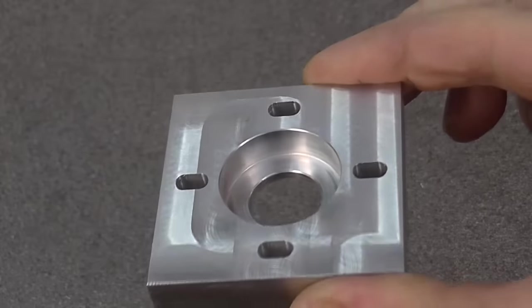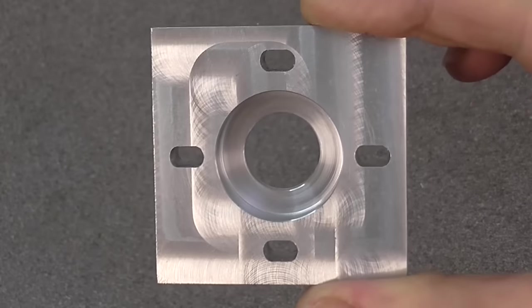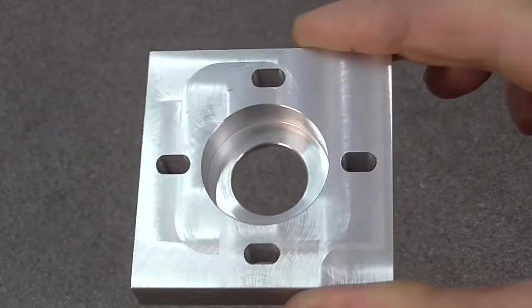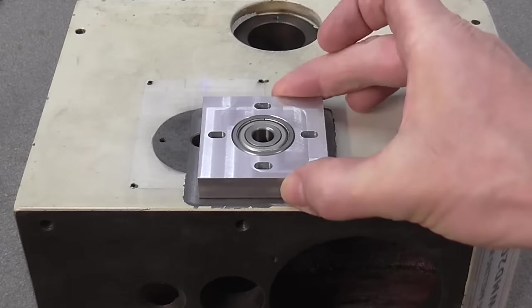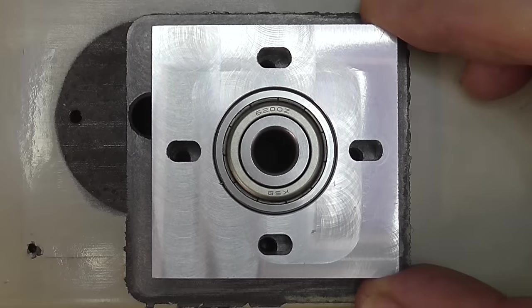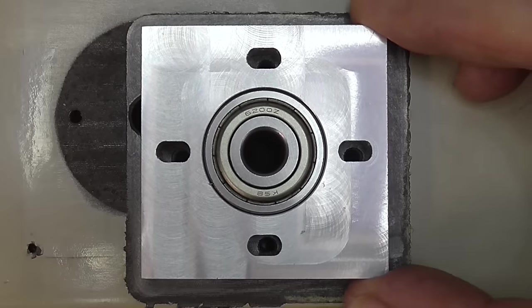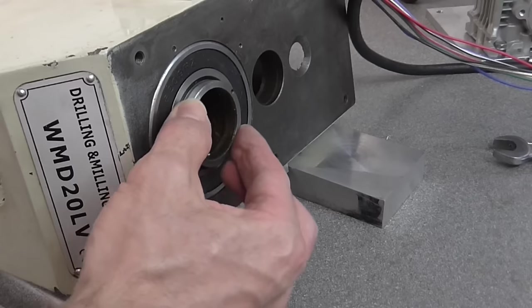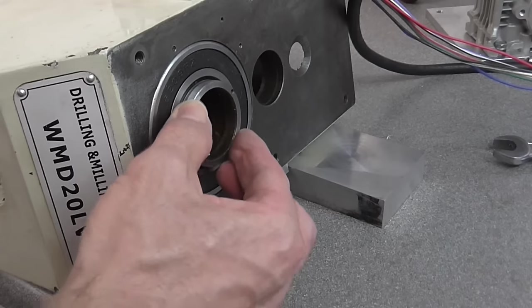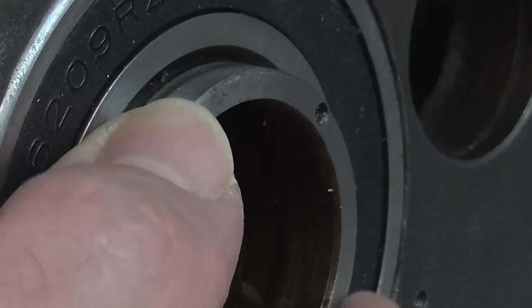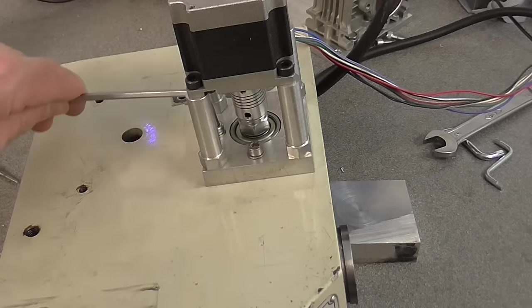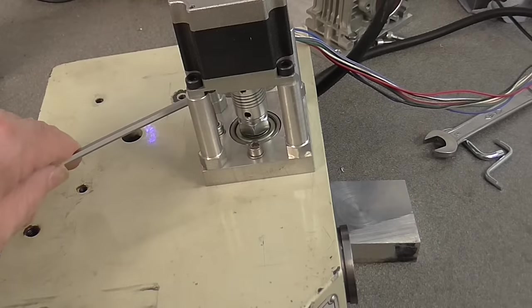Two of these brackets will hold the worm shaft on either side. The slotted holes allow for adjustment. To reduce the backlash between the worm and the wheel, I tap the brackets inwards.